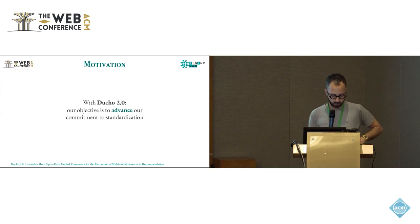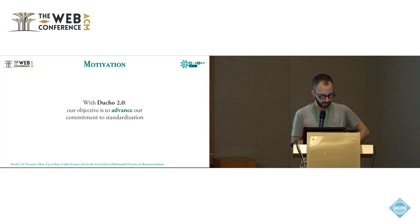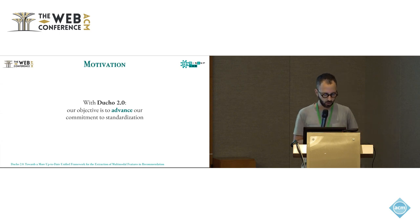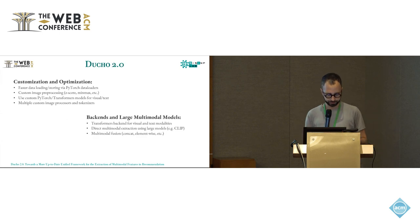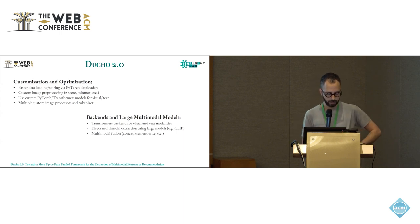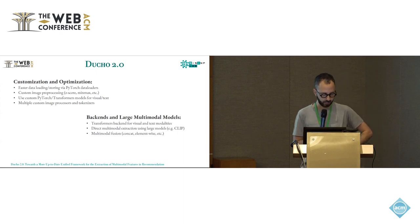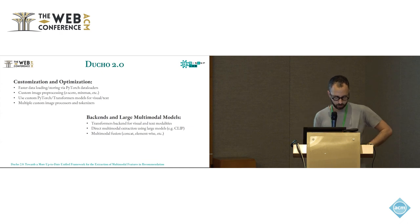With Duccio 2.0, we introduce several enhancements focusing especially on customization and standardization of the process. These improvements include faster data loading and storing through PyTorch data loaders for efficient data handling. We also introduce custom image preprocessing techniques such as data score normalization, allowing users to tailor their preprocessing for their specific needs.